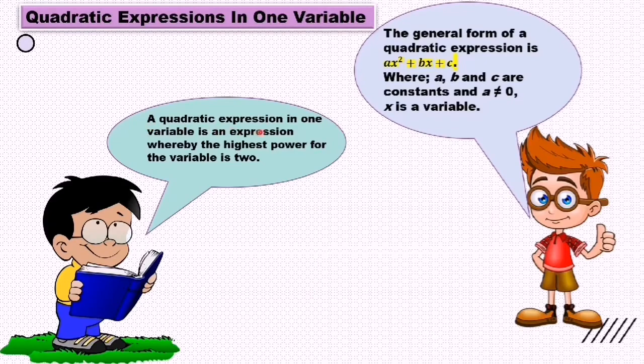A quadratic expression in one variable is an expression whereby the highest power for the variable is 2. The general form of the quadratic expression is ax² + bx + c, where a, b, and c are constants and a ≠ 0, x is a variable.